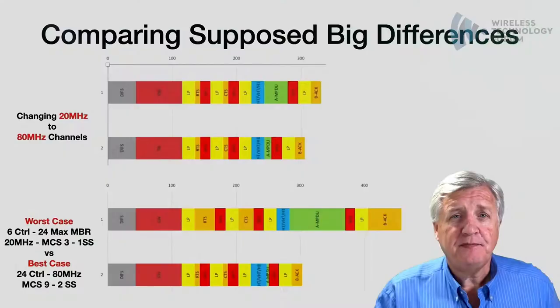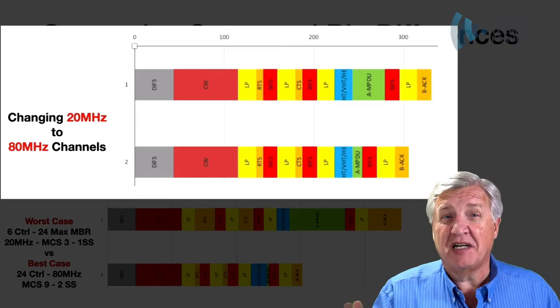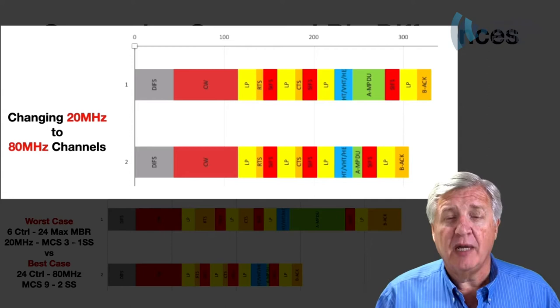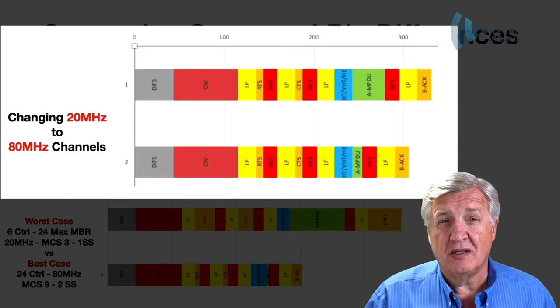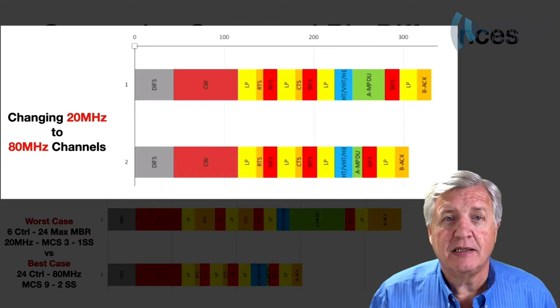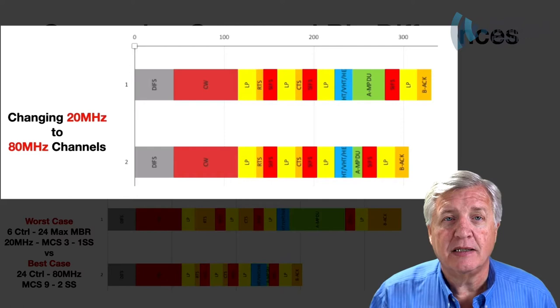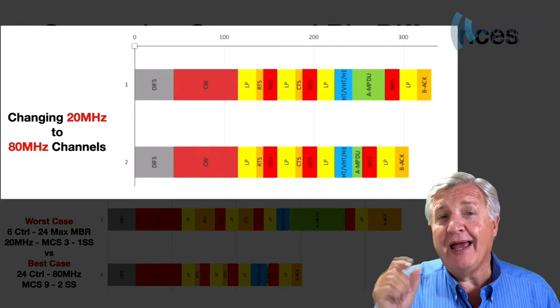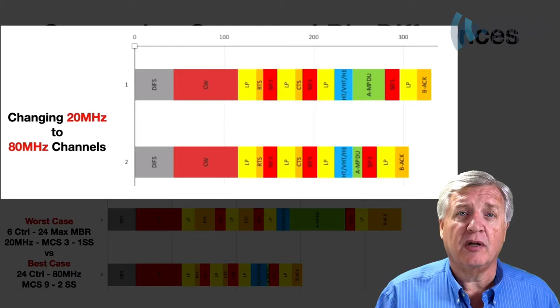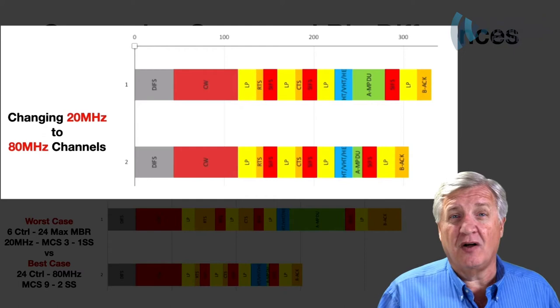Let's look at two examples: 20 versus 80 MHz channels, and best versus worst possible Wi-Fi. For 20 vs. 80 MHz: the air time contention and RTS/CTS are exactly the same for both. The payload portion goes faster at 80 MHz, but all the other pieces don't. The actual net time savings is very small. And I'm not even showing the downside: going to 80 MHz channels means you'll lose 6 dB of SNR additionally, plus you have primary vs. secondary channel and OBSS overlap issues — all for a tiny gain.